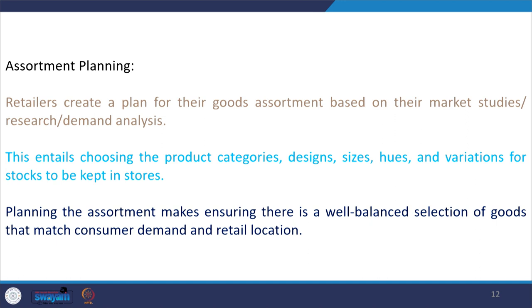Assortment planning is all about choosing the product categories, designs, sizes, hues, and variations for the stocks that will be kept in stores. This sums up what should be kept in stores — what products customers will see when they enter the store.